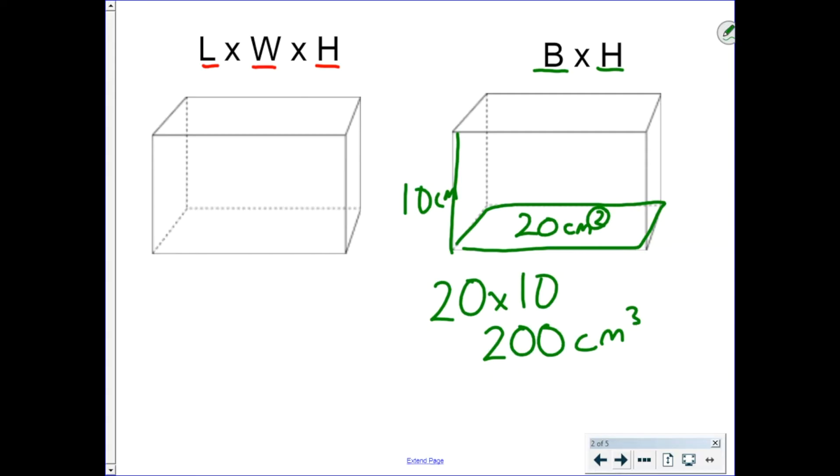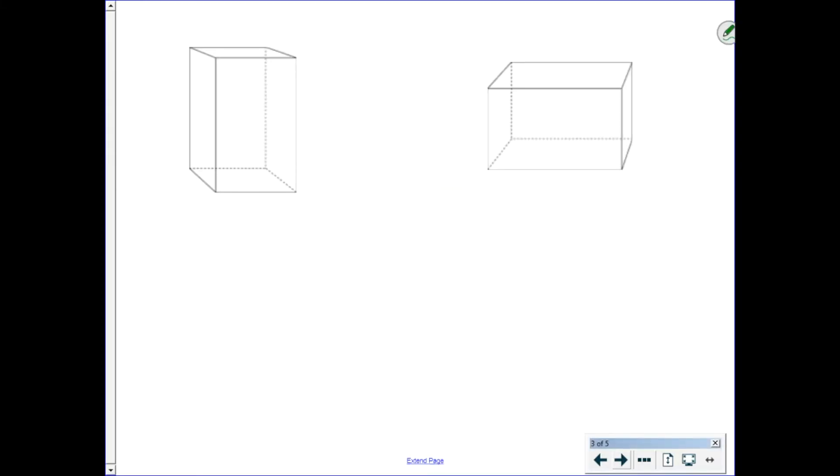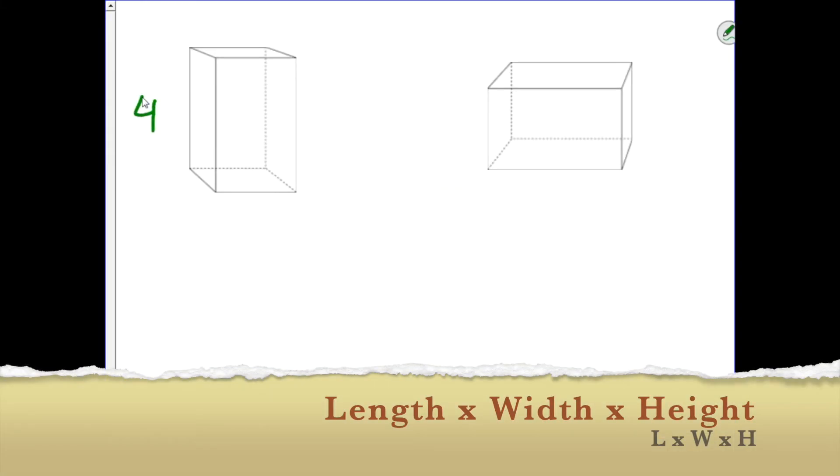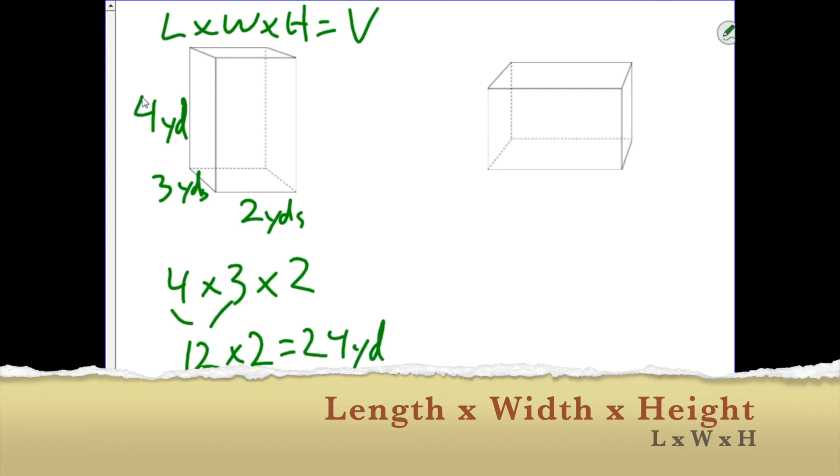And those are the two formulas you can use to find the volume of a rectangular prism. I will now show a couple of examples using each formula. In this first example, I'm going to give you all side lengths. Four yards, three yards, and two yards. Length times width times height equals volume. Four times three times two. Four times three is 12, 12 times two is 24, or 24 cubic yards.